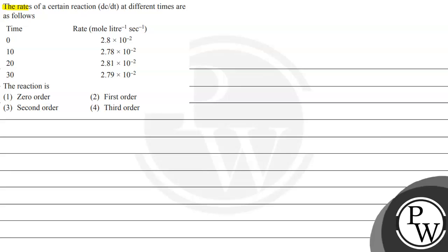Let's read this question. The rates of a certain reaction at different times are as follows: time is given as 0, 10, 20, 30 and the rate is given as 2.8 × 10⁻², 2.78 × 10⁻², 2.81 × 10⁻², and 2.79 × 10⁻². The question asks whether the reaction is zero order, 1st order, 2nd order, or 3rd order.